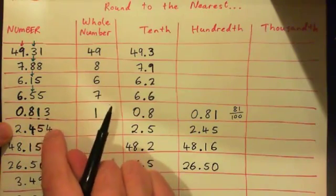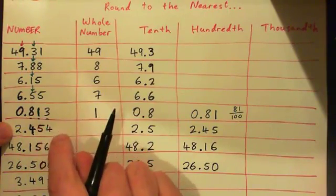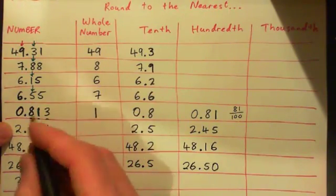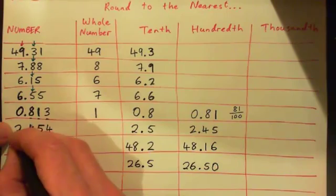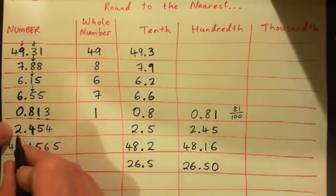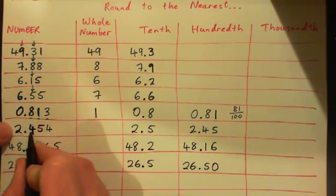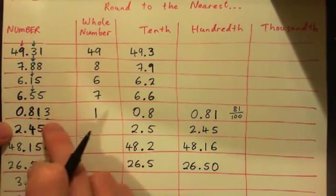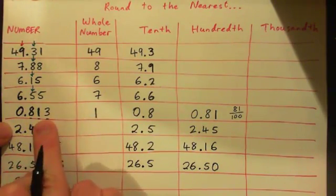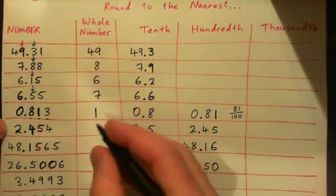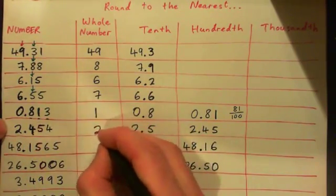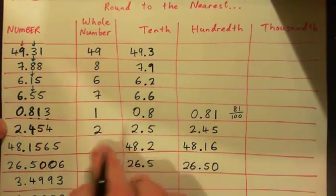Now 2.454 — round to the nearest unit — two. After two comes a four, so I just look at these two digits and I've got to round down, right? Down to two.